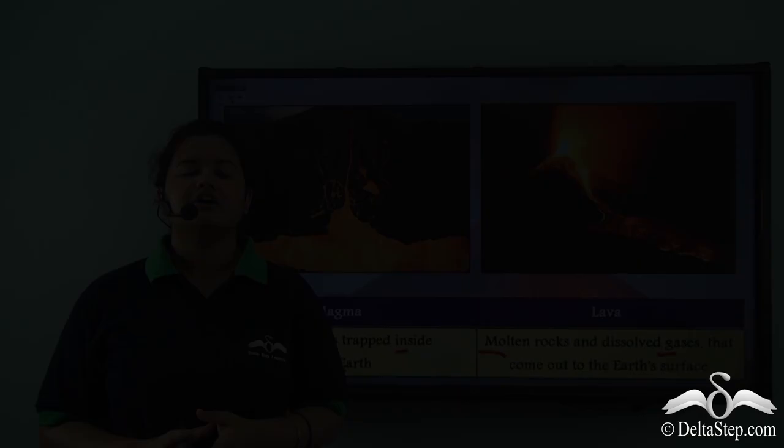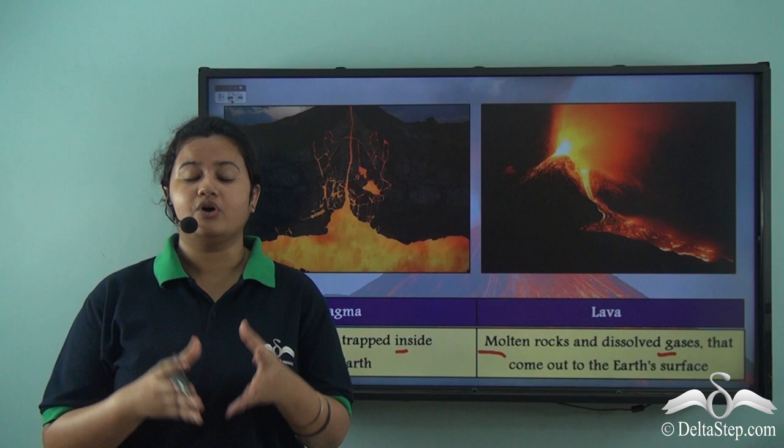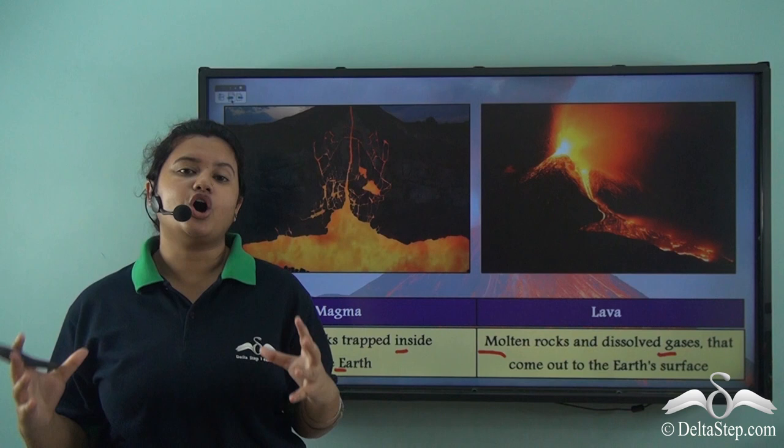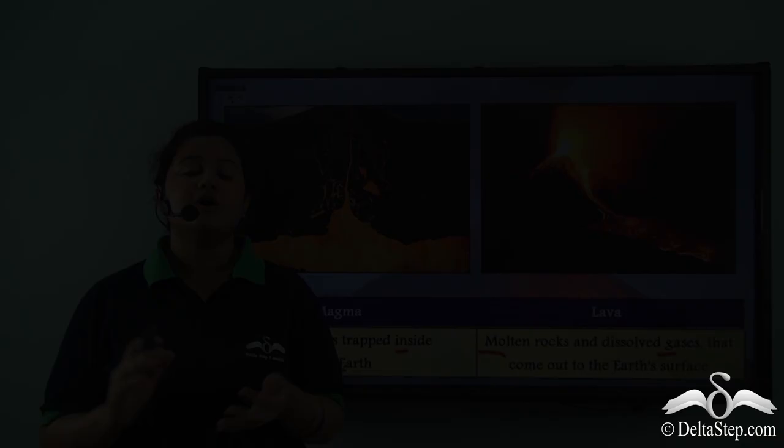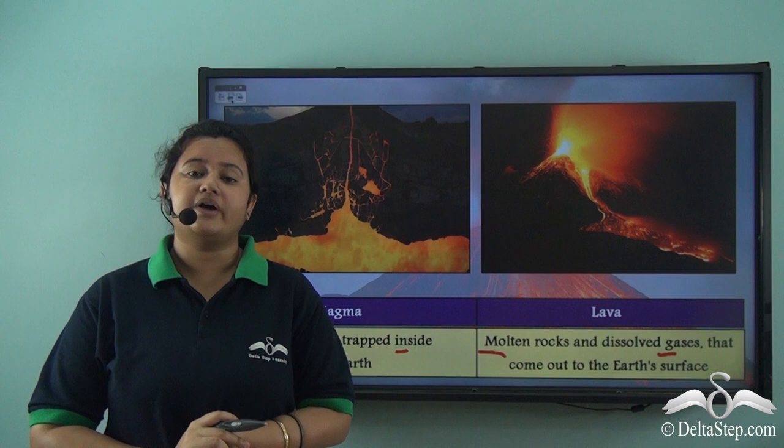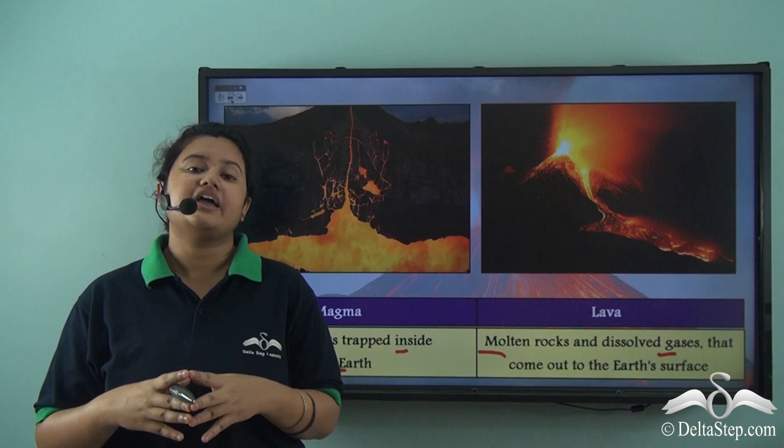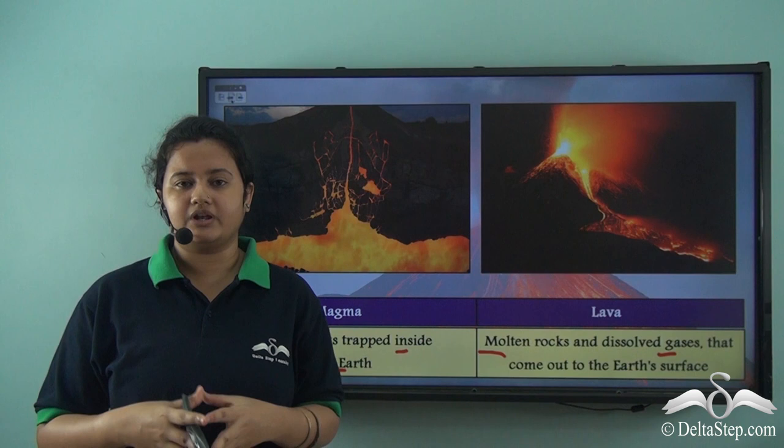So today in this video we understood the meaning of a volcano. What is a volcano? It is an opening on the Earth's surface through which hot molten materials and gases come out. We also studied about the formation of volcano. We learnt that volcanoes erupt when due to tectonic movements magma chamber gets exposed and they erupt as a volcano. Then we learnt about various parts of a volcano and different products of a volcano. And finally we understood the difference between magma and lava.